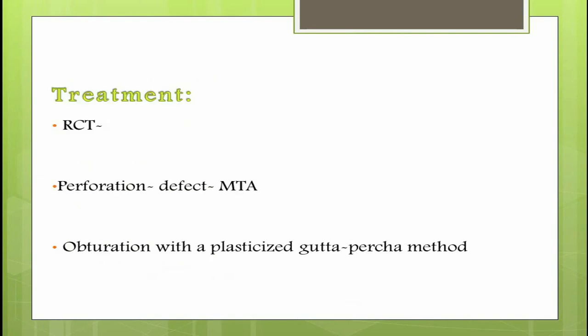The management of internal resorption is complete removal of the pulp tissue followed by calcium hydroxide dressing, because it is a potent inhibitor of inflammation, and obturation should be done with a plasticized gutta-percha method. If perforation of the root is present, such a defect should be filled with mineral trioxide aggregate or MTA, followed by obturation with the plasticized gutta-percha method. The prognosis is usually good if treated before perforation occurs; in case of large perforation, extraction of the tooth is indicated.